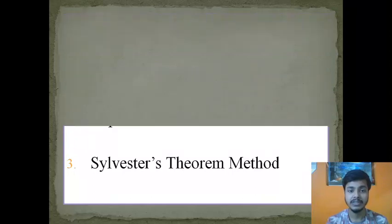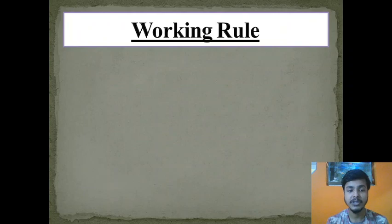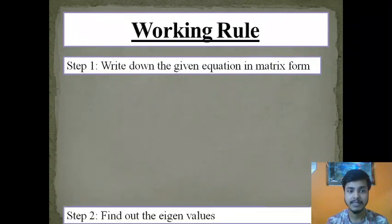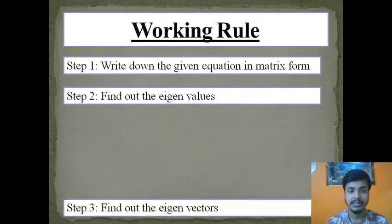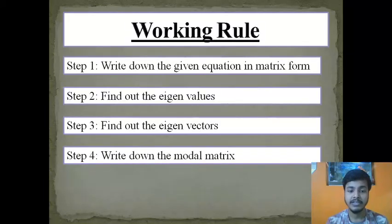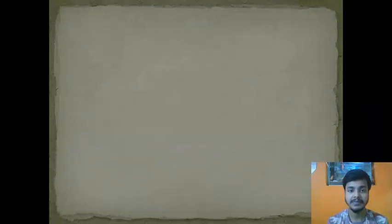Let us see the working rule which needs to be known in order to solve the problems. The very first step says: write down the given equation in matrix form. Second step: find out eigenvalues, then find out eigenvectors, write down the modal matrix, and at last use the solution of the matrix form to get the answer. Now let us take an example on this topic.